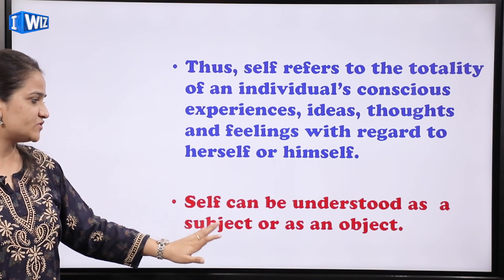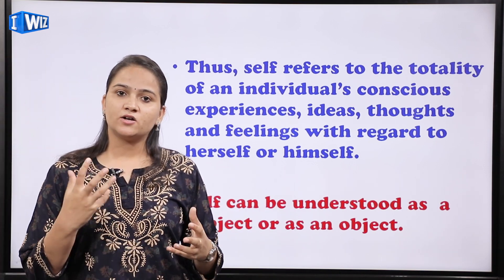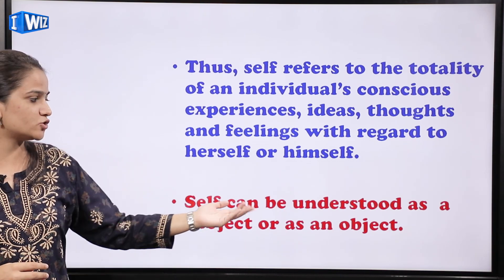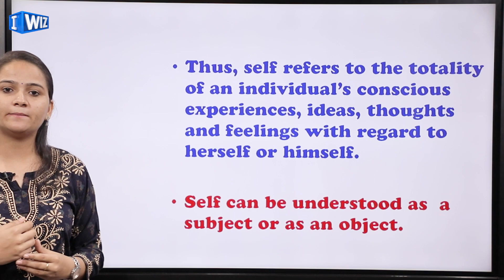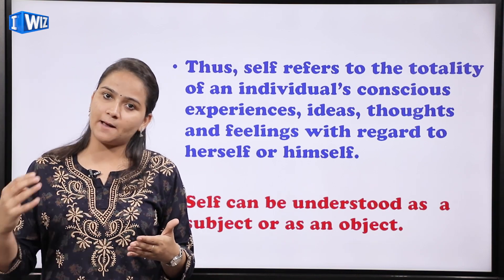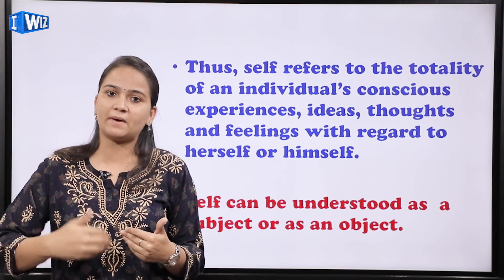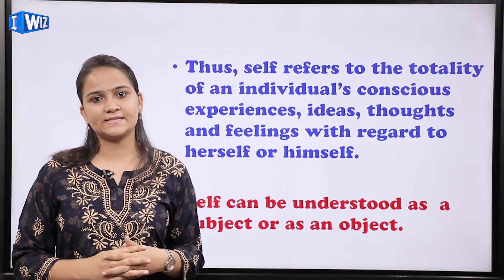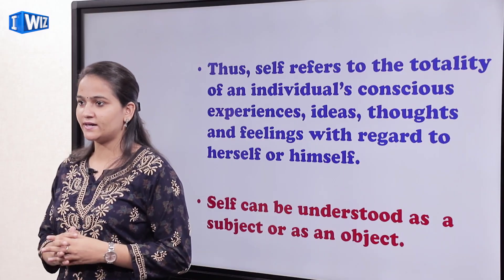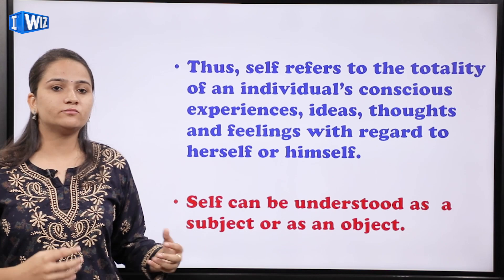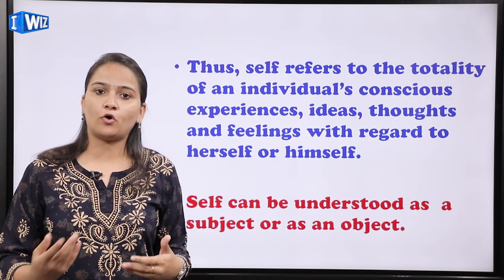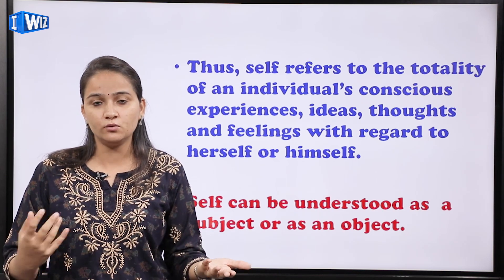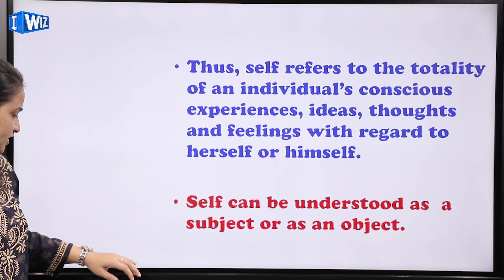Self can be understood as a subject or as an object। यानि, कुछ situations में as a subject operate करूँगी और कुछ situations में as an object। अगर मैं कहूँ I am a dancer — जो भी sentence I am से शुरू है, उसमें मैं subject हूँ। Object क्या होगा — when I say I often get hurt very easily, यानि मेरे साथ कुछ हो जाता है, उस situation में मैं एक object हूँ। I am studying — वहाँ पर आप as a subject play करते हो।